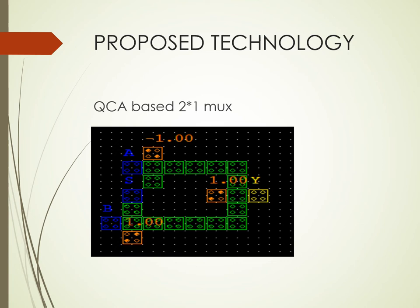For QCA, we have developed two basic gates: the inverter gate and the majority gate. The inverter gate takes input one and gives output zero. If the majority of cells have the same logic, the output is also the same. If there is no Coulombic repulsion, the same logic transfers to the next cell. If there is Coulombic repulsion, the electrons change their logic. Logic zero has a polarization of minus one, and logic one has a polarization of plus one.